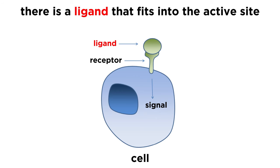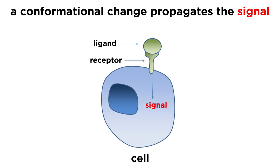As we recall from the biochemistry series, any receptor will have a ligand, which is a molecule that fits into the active site of the receptor, and in essence turns the receptor on, evoking a conformational change that then propagates the signal in one of several ways.